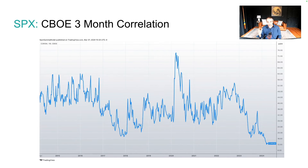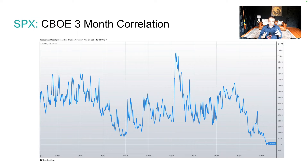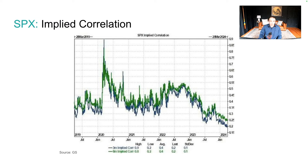The CBOE three-month correlation is the same story — now well below anything seen in recent past. Looking at options prices three months out, people think there's going to be a lot more movement up in certain sectors or stocks versus the index as a whole. Goldman's implied correlation data further drives home this point that correlation is indeed very low.